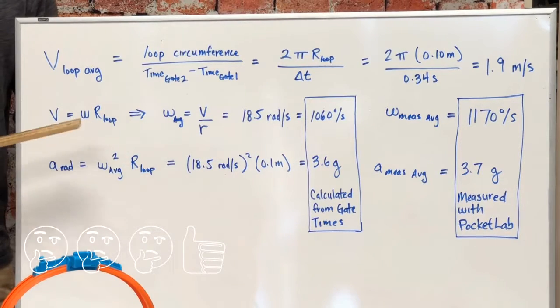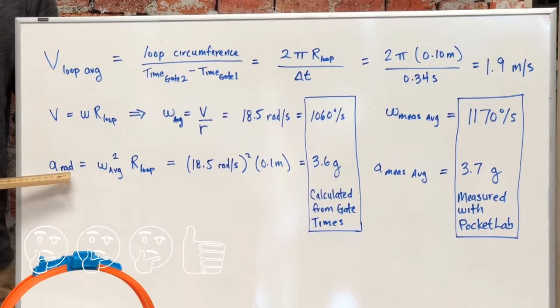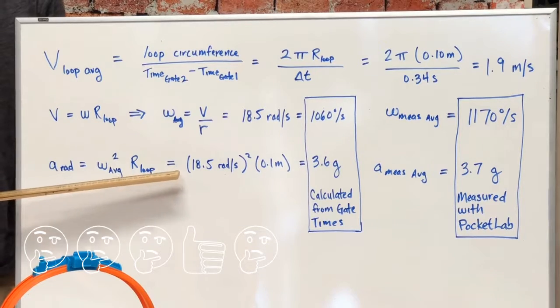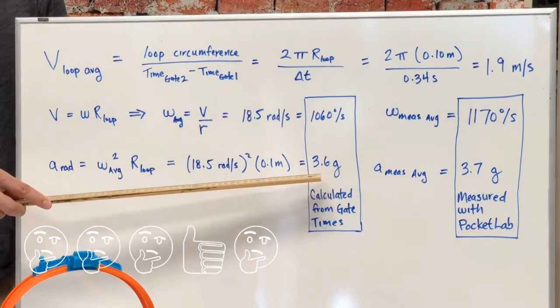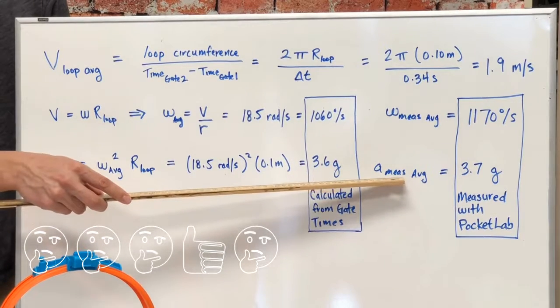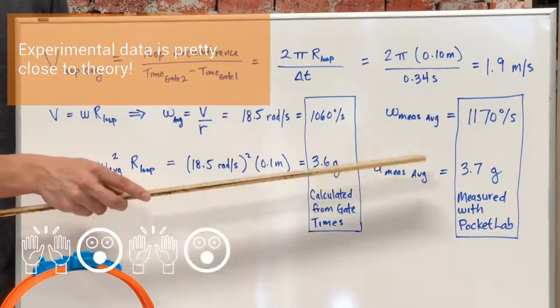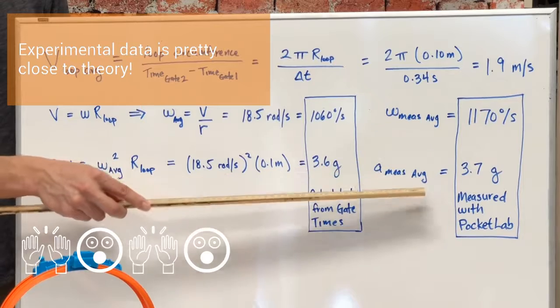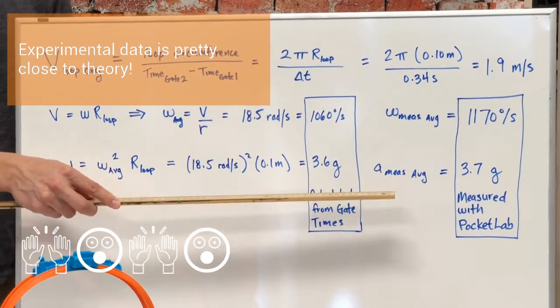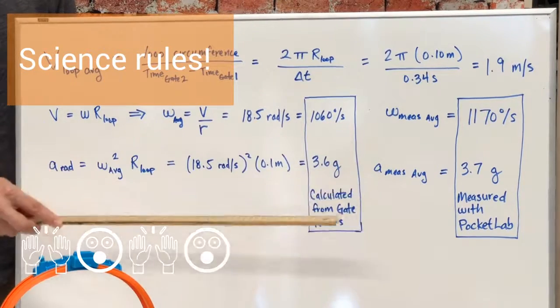Now, we can take those timing gate data and also calculate our radial acceleration, or the G-forces that we're feeling inside the loop. And what we calculate is 3.6 Gs on average. Now, if we look at our measured data and average that out over the loop, we averaged about 3.7 Gs. So we're getting good agreement from the theory that we're using and our measurements of the timing gates versus our direct measurements using the gyroscope and the accelerometer.